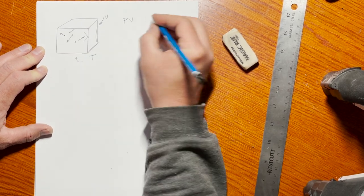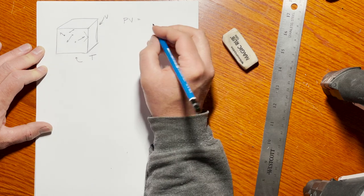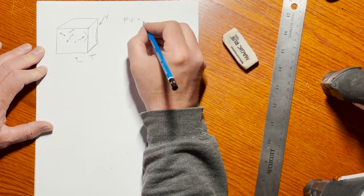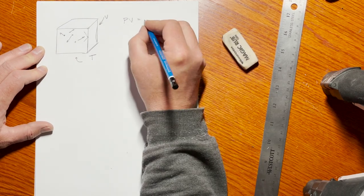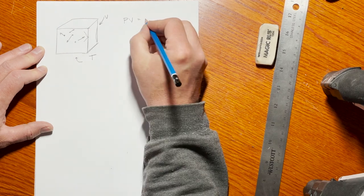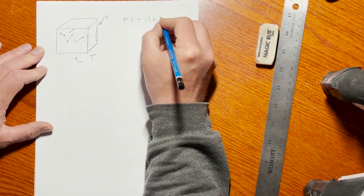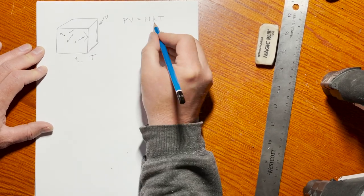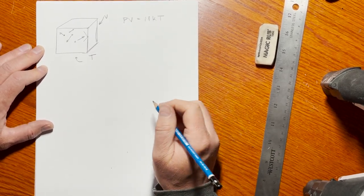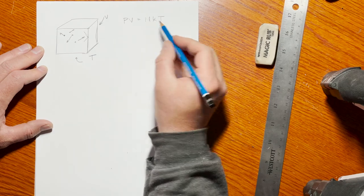That this box happens to be at. That relationship is the ideal gas law, and we can write that: PV is proportional to the number of molecules times Boltzmann's constant times T, where k is Boltzmann's constant.